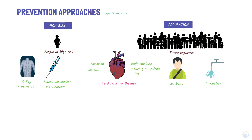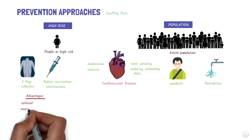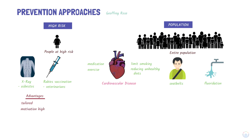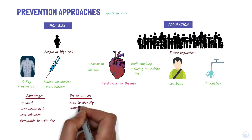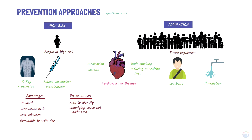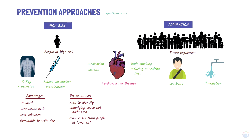There are advantages and disadvantages of each of these approaches. The main advantages of the high-risk approach are that prevention can be tailored to suit the individual and their circumstances. Motivation is likely to be high, both by the individual and healthcare provider. The interventions are usually cost-effective, and the benefits tend to outweigh the risks. The disadvantages are that it can be hard to identify those who are at high risk, it doesn't necessarily address the underlying cause of illness, and there are generally more cases of disease from people at lower risk compared to those at high risk. Also, prevention behaviors may be hard to do as an individual if it's different from what peers are doing.